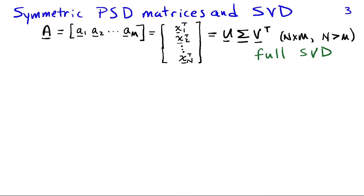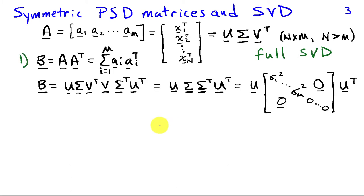There's a connection between the eigenvectors and eigenvalues of a symmetric positive semi-definite matrix and the singular value decomposition. To explore this, we define an n by m matrix A with columns A1, A2 through A_m and rows X1 transpose, X2 transpose, down to X_n transpose. We'll decompose A using its full SVD as U sigma V transpose, where both U and V are square matrices and sigma has the same dimensions as A. The first case is to define matrix B as A times A transpose, written as the sum from i equals 1 to m of A_i A_i transpose — the sum of outer products of all the columns.